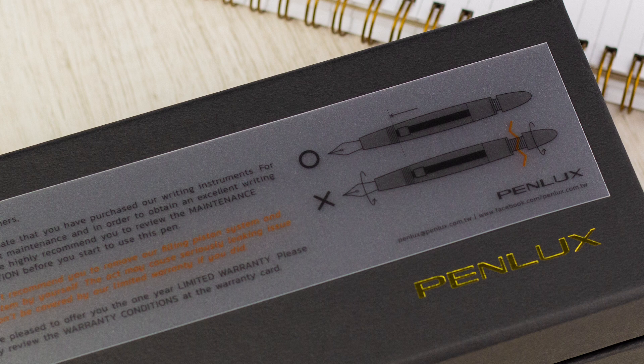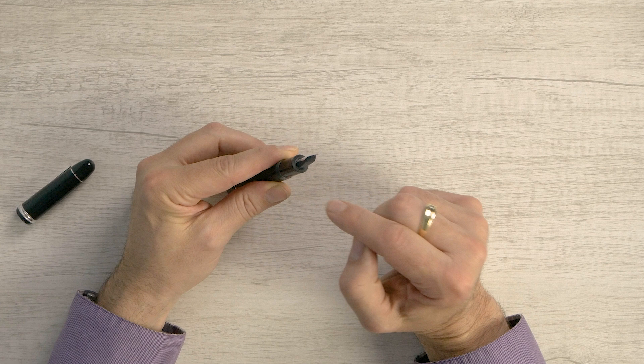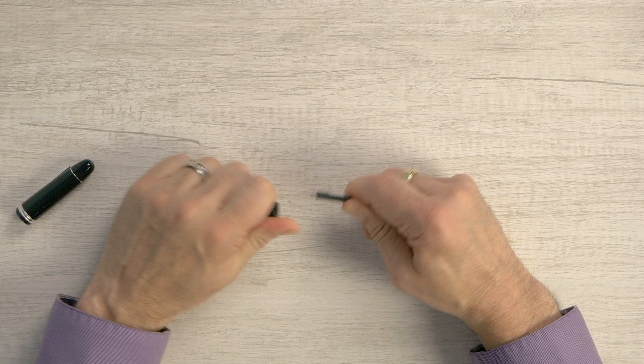What it looks like they've done is they've secured the collar here that the nib and the feed slide into. They've secured it into the section. So this nib comes out friction fit only. And it only goes in one way.